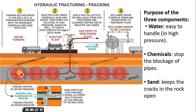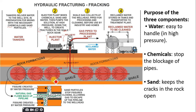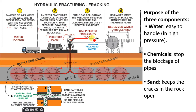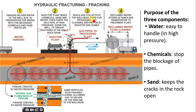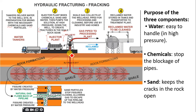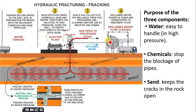Once the fracture is created, the natural gas and oil find a pathway through the shale to flow up to the surface. The shale gas is collected at a wellhead pipe for processing and cleaning before use in industries and homes. The water that comes to the surface is also collected and sent for recycling.